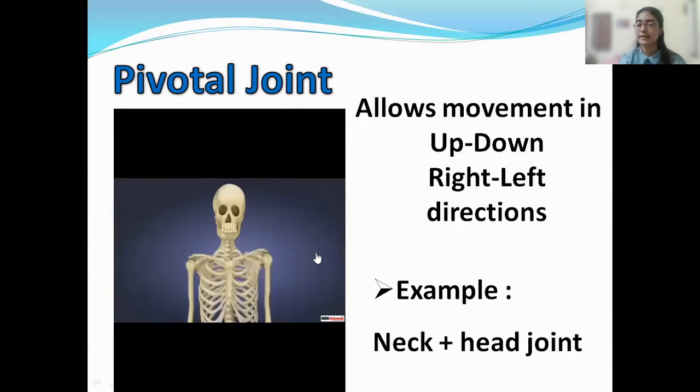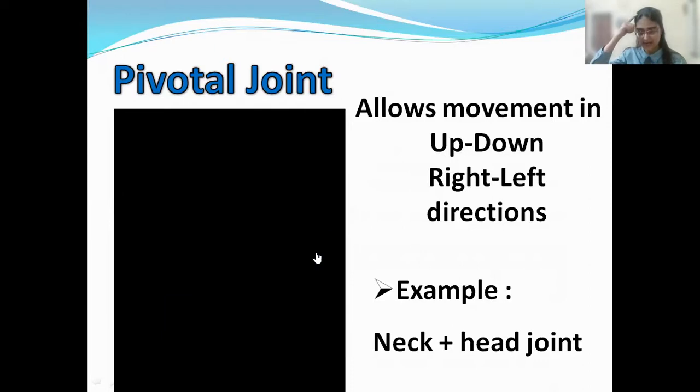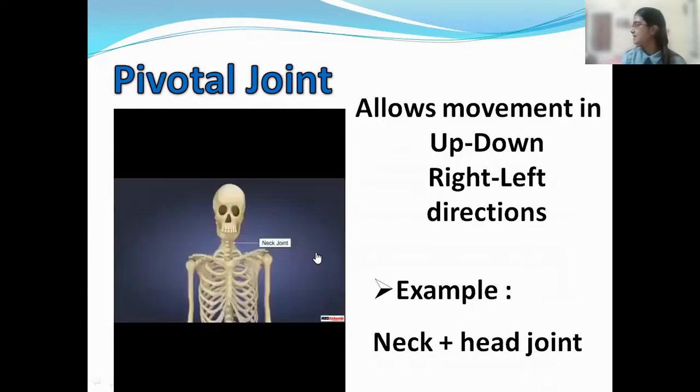And as you can see, which part are you moving? Yes. Your head. And where is it attached? To your neck. So, the neck along with the head makes a pivotal joint which allows movement in up, down, right and left direction. Very good.